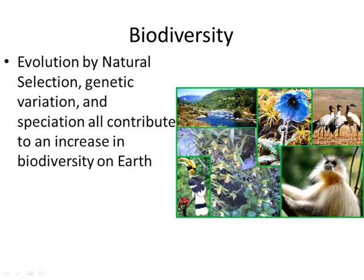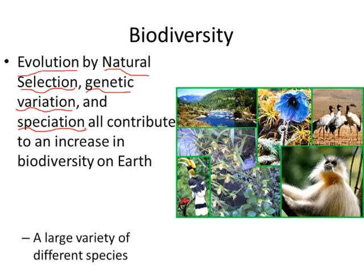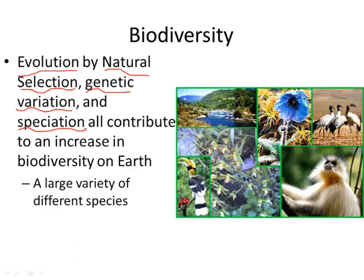To summarize, all the differences in evolution can happen in three ways: natural selection — the most fit for the environment will survive and reproduce; genetic variation — the differences we get from mutations and gene shuffling; and speciation — caused by behavioral, temporal, or geographic isolation. All of these create a variety of different species on Earth.